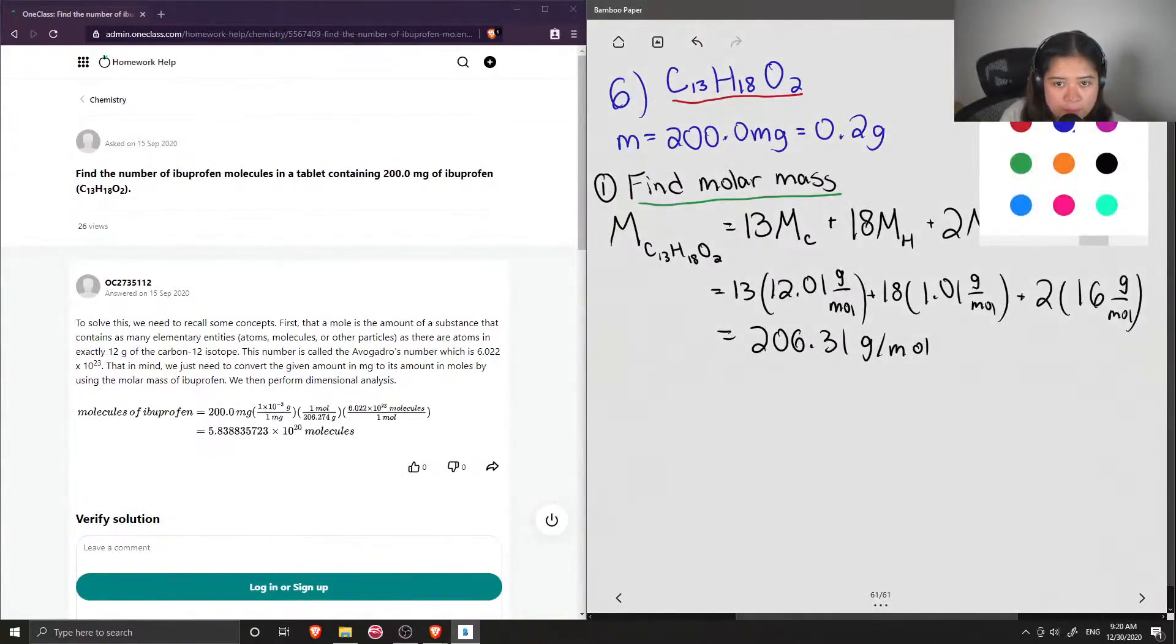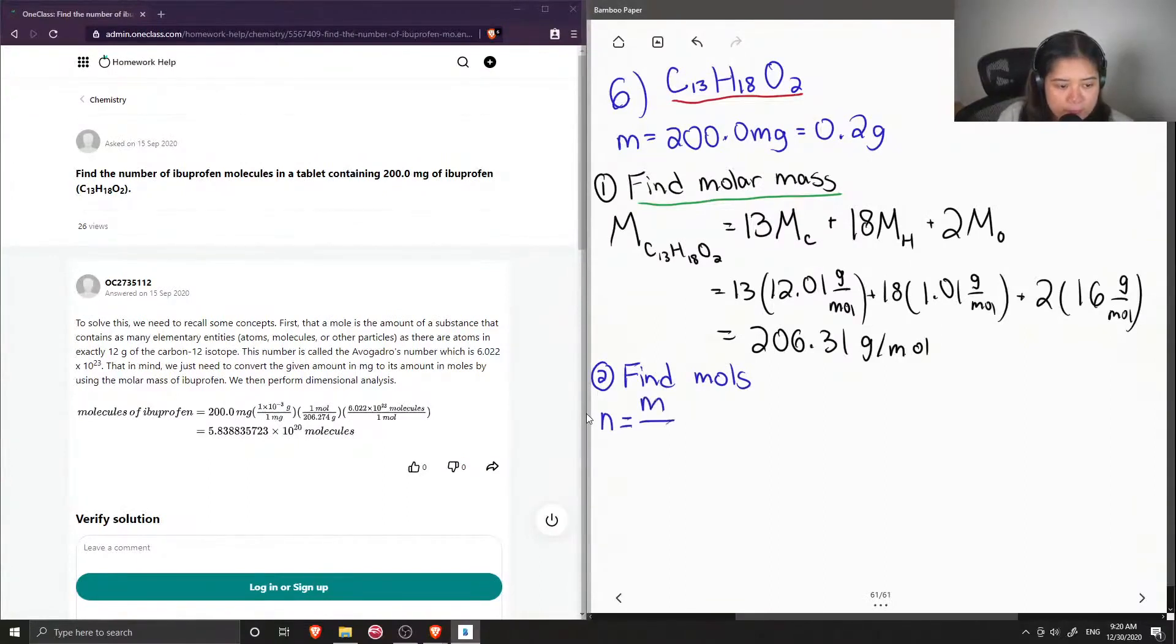Okay, so that's part one of answering the question. Second part is to now find the number of moles of ibuprofen. So to do this, it is just the mass divided by the molar mass. So this is why I converted our 200 milligrams to 0.2 grams, just so that I can cancel out the grams when I divide by the molar mass. So it's going to be 0.2 grams divided by 206.31 grams per mole. Grams will cancel out. And our number of moles is 9.69 times 10 to the negative 4.